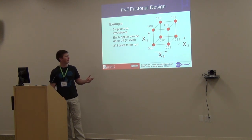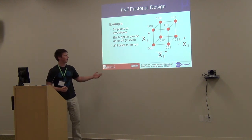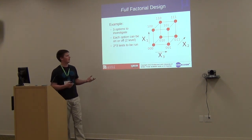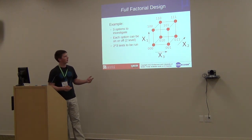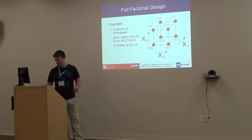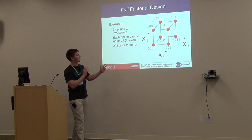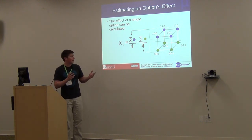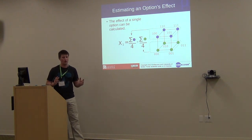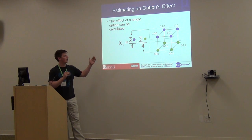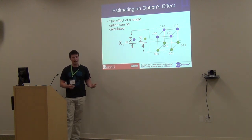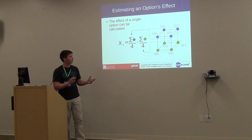For three factors you have eight different tests, with X1, X2, and X3 each representing a different optimization that can be on or off. As you add more optimizations it becomes exponentially large and infeasible to test them all. You can estimate how much of an effect X1 has on average by taking the average energy of all tests where the optimization is on, subtracting the average when it's off. This gives a rough effect for that factor, and doing this for each optimization gives you an ordering of most to least effective.